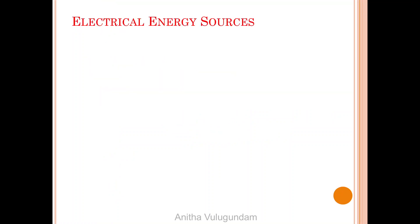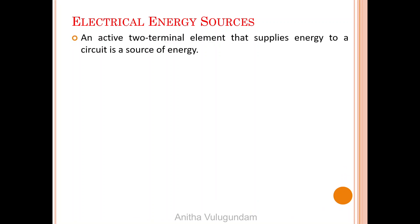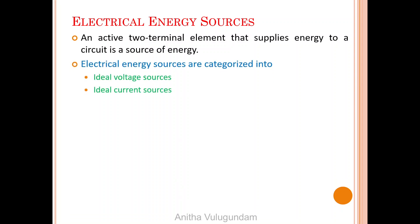Let us talk about energy sources — here we talk about only electrical energy sources. An active two terminal element that supplies energy to a circuit is called an energy source. Electrical energy sources are categorized into two: one is ideal voltage source and another one is ideal current source.